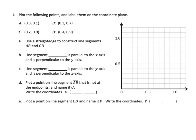Number one says: plot the following points and label them on the coordinate plane for A, B, C, and D. Let's first look at the coordinate plane. We start with 0, go to 5 tenths, and we see 1, 2, 3, 4, 5 intervals between 0 and 5 tenths. So each one of these must represent 1 tenth: 1 tenth, 2 tenths, 3 tenths, 4 tenths, then to 5 tenths, and so on.